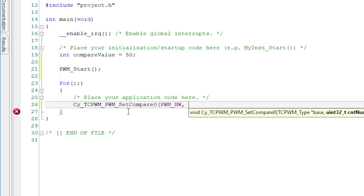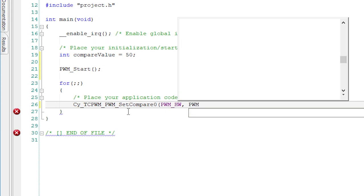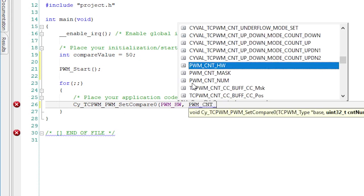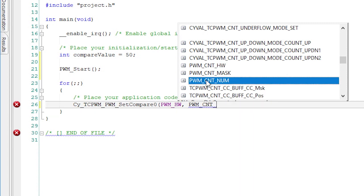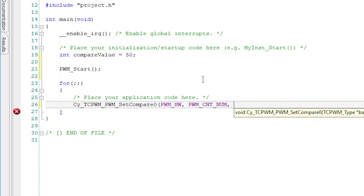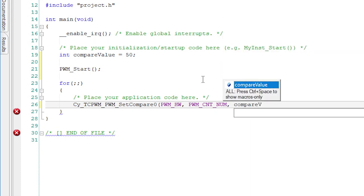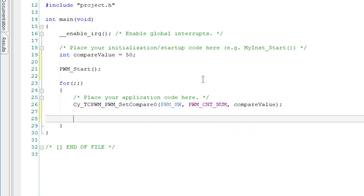Each PWM hardware block has multiple PWM counters, so the set compare function needs to know which one I want to change. In this case, I'll use the macro PWM_CNT_NUM. Now, the last argument is used to set the actual compare value. I'll set it to the local variable we created earlier called compare value.